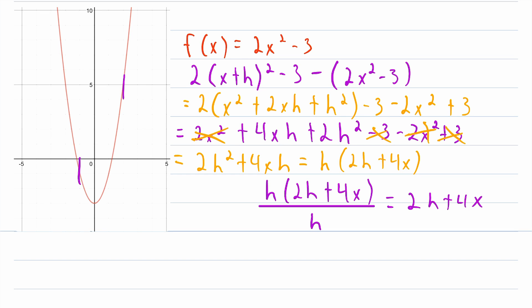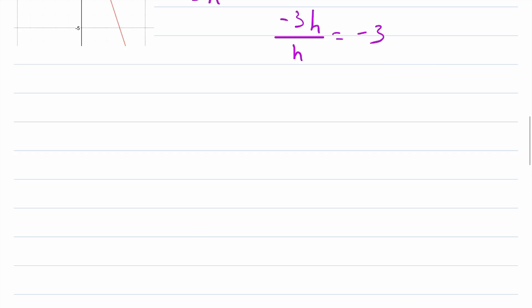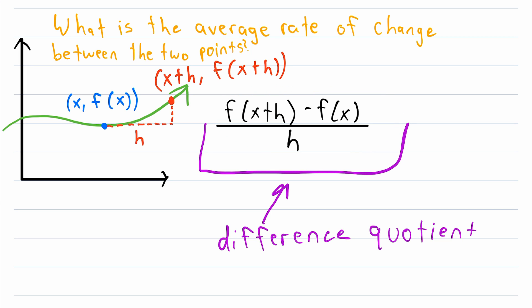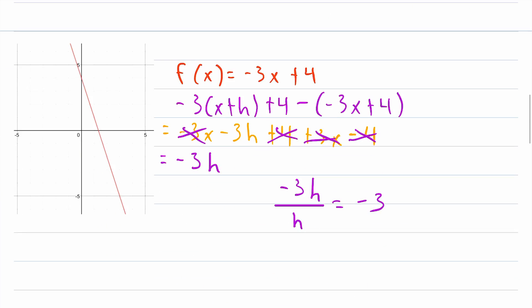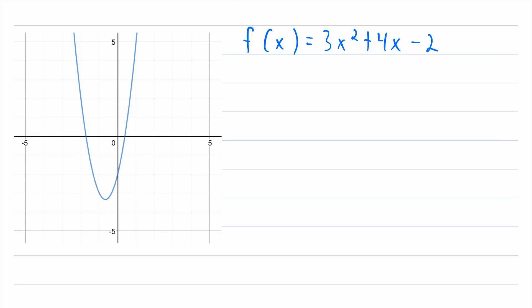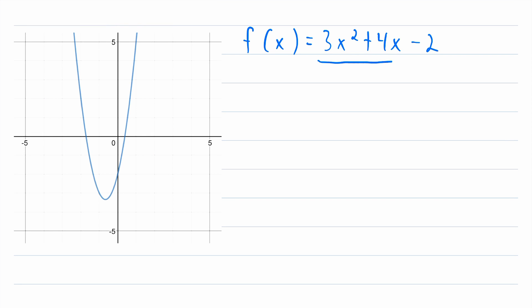Alright everyone, that should just about do it. The difference quotient is f of x plus h minus f of x over h, and it tells us a function's average rate of change over some distance. Here is an example to try on your own: find the difference quotient of 3x squared plus 4x minus 2. I'll leave the solution in the description — be sure to let me know how it goes in the comments.